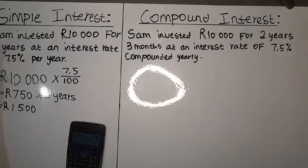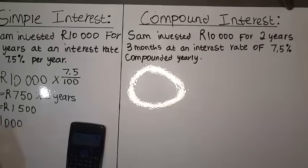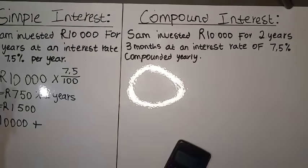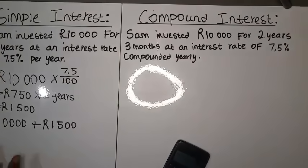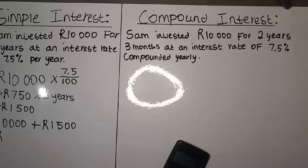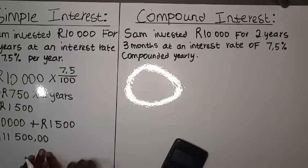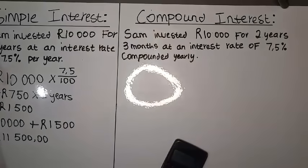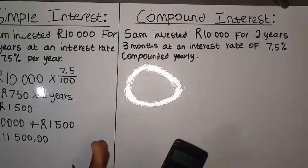Now you take the amount he invested — which is 10,000 — and add it together with the interest, which is 1,500. So 10,000 plus 1,500 gives a total amount of 11,500 grants. This means if Sam invests 10,000 grants for two years at 7.5 percent per year, the final amount after two years will be 11,500 grants. This is how we calculate simple interest. We're now going to move on to compound interest.